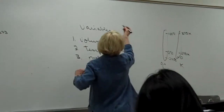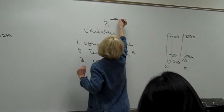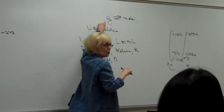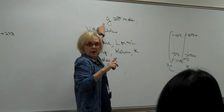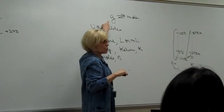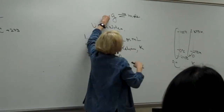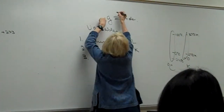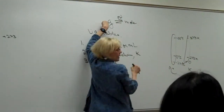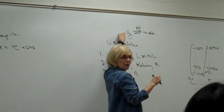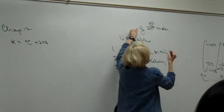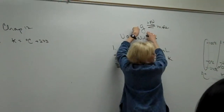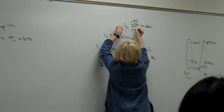Let's relate this back to Chapter 2. We have to do this forever as long as we take chemistry. If you have grams and you need to get to moles, you know we use the formula weight. What do we do? Divide. And if you're coming back from moles to grams, what do we do? Multiply.